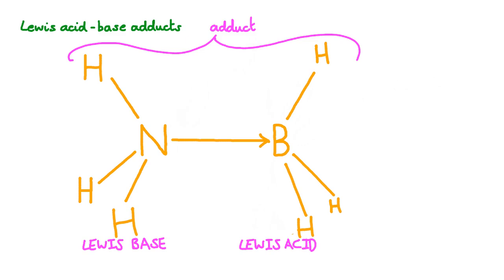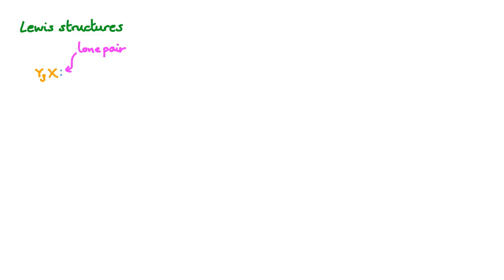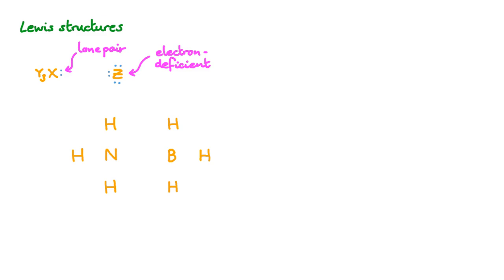But that leaves one problem: how do we know where lone pairs are and are not? One of the neat things about Lewis acid and base theory is the strong relationship it has with Lewis structures, otherwise known as electron dot diagrams. Lewis structures allow us to highlight lone pairs as well as electron deficient areas, for instance when we don't have a full octet. Let's have a look at the previous example — the reaction between ammonia and borane. On the ammonia side, we have three hydrogen atoms contributing one valence electron each and a nitrogen atom which contributes five. That's eight electrons in total — enough for a single bond between the nitrogen and each hydrogen, and two left over for the lone pair of nitrogen, completing its octet.